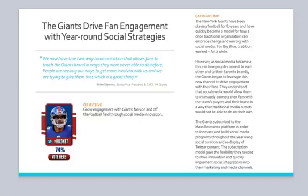The background: The New York Giants have been playing football for 87 years and have quickly become a model for how one traditional organization can embrace change and win big with social media. As social media became a force in how people connect with each other and their favorite brands, the Giants began to leverage this new channel to drive engagement with their fans. They subscribed to the Smash Relevance platform to innovate and build social media programs throughout the year using social curation and redisplay of Twitter content, giving them the flexibility to drive innovation and quickly implement social integrations into their marketing and media platforms.